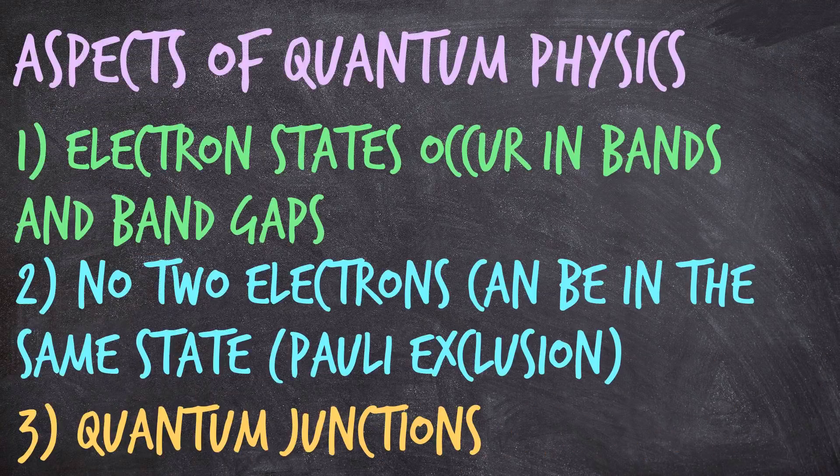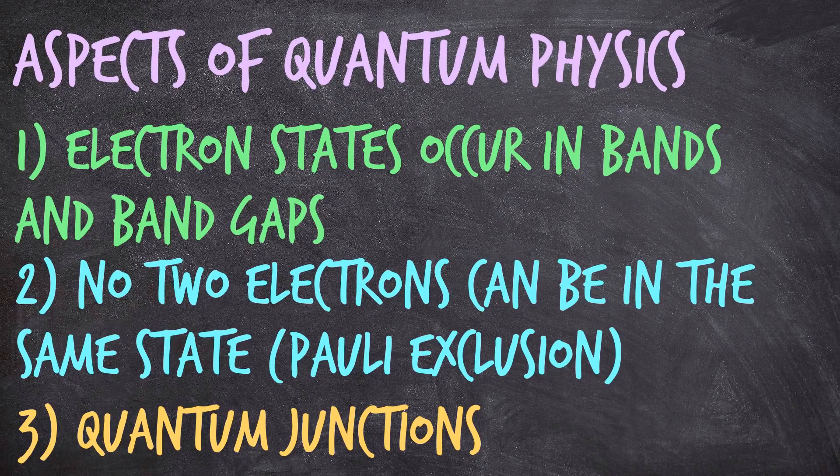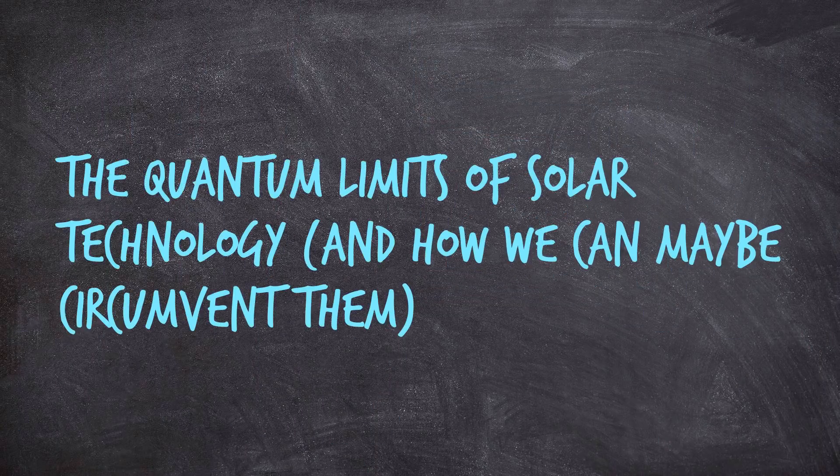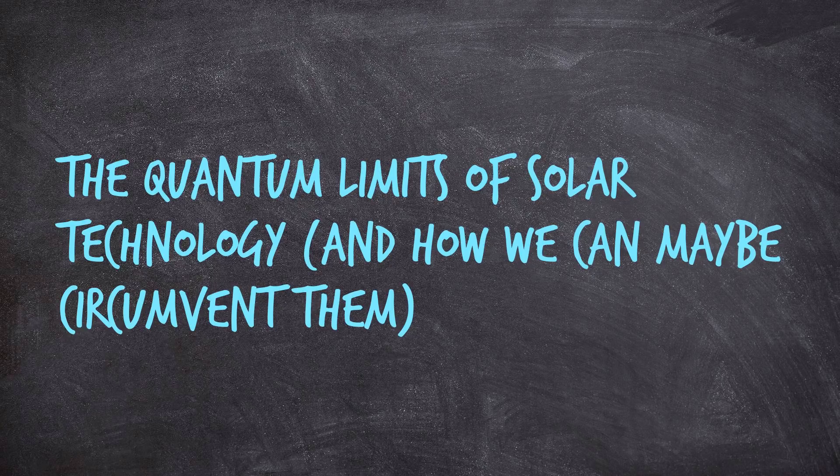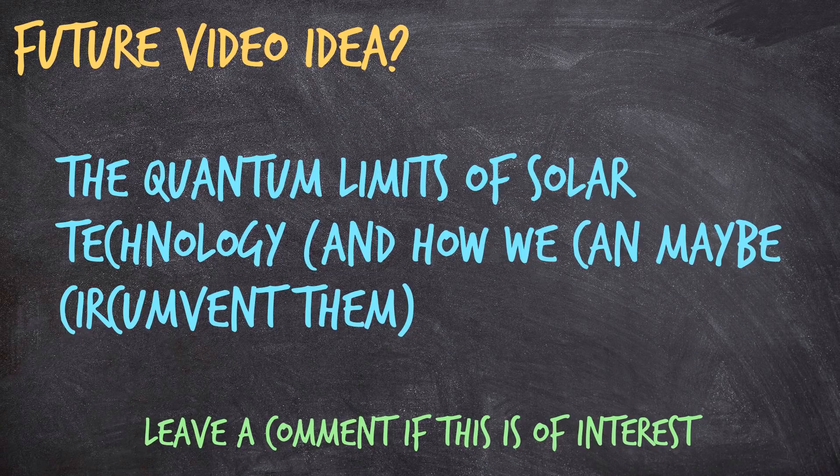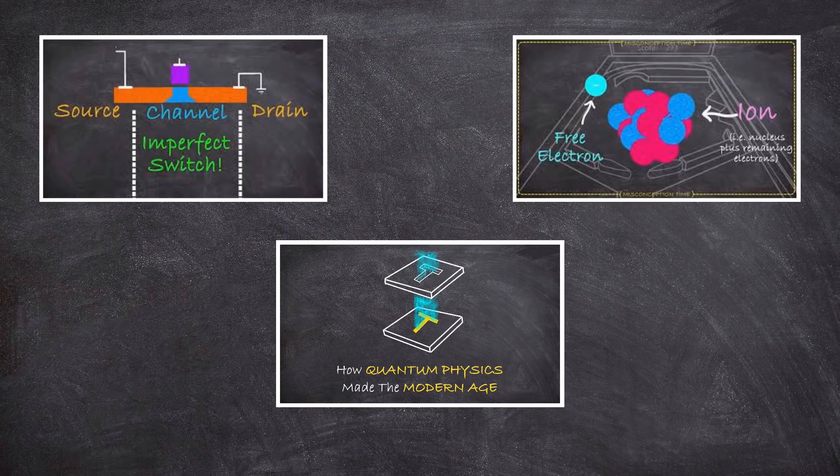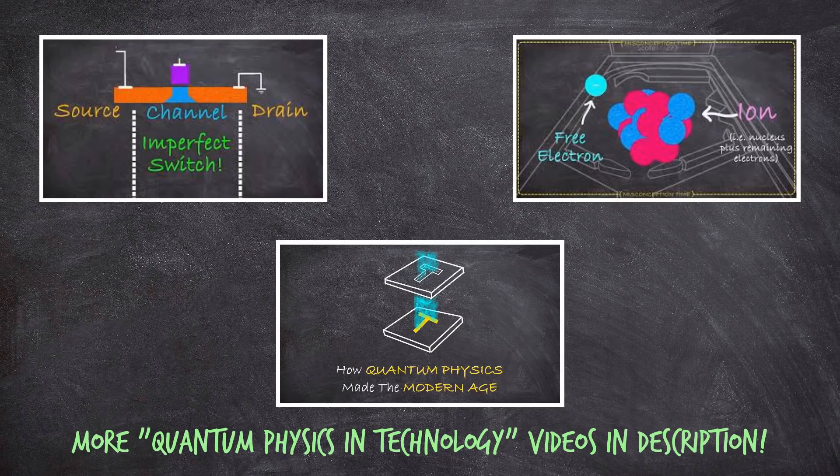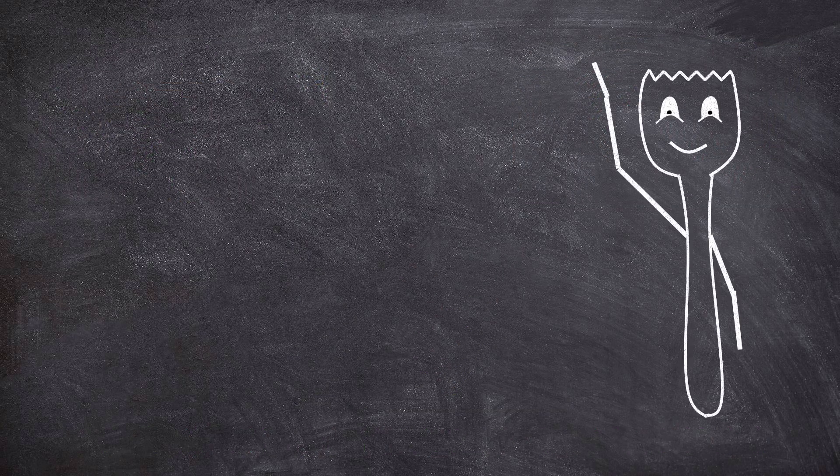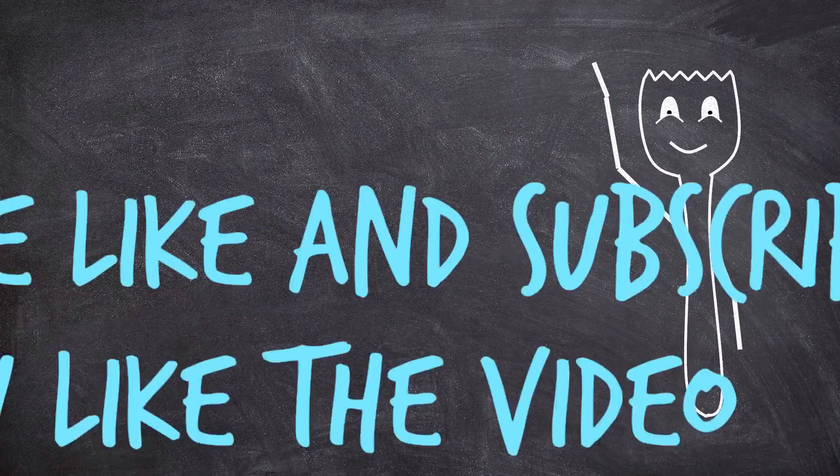So those are our three quantum ingredients that make a solar panel work. By the way, if you would like to know how quantum physics also dictates the fundamental limits of solar power and what we can maybe do to circumvent these theoretical limits, I might do a follow-up video to this. So let me know in the comments if that's of interest. Also, if you want to know more about how these quantum junctions basically form the basis of the entire digital age, check out the description for a list of videos that explore this further. Anyways, I hope you enjoyed the video. Please like and subscribe if you did, and have a good one.